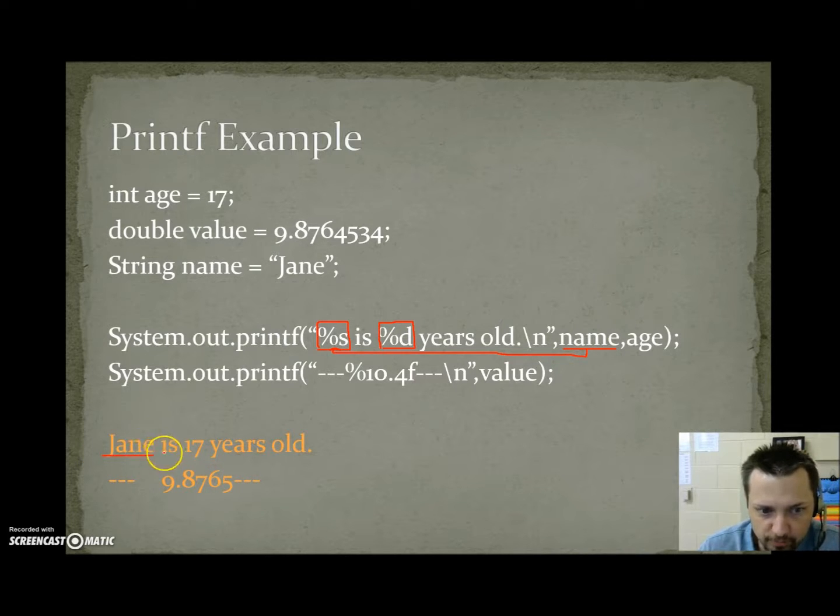So, name stores Jane, and that's where we get Jane. Down at the bottom, this is our output. Jane is. See, it's %s. So text will come here, space is, space a number. That's what the %d is. The second parameter is age. When we take age and insert it in, its value is 17. So that's when a 17 appears before the is in years old. So Jane is 17 years old.